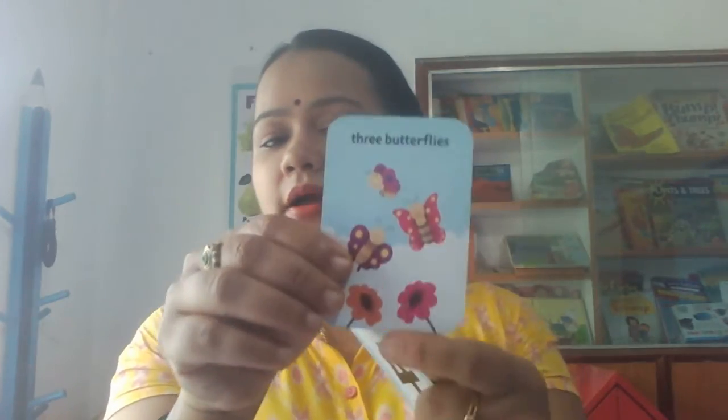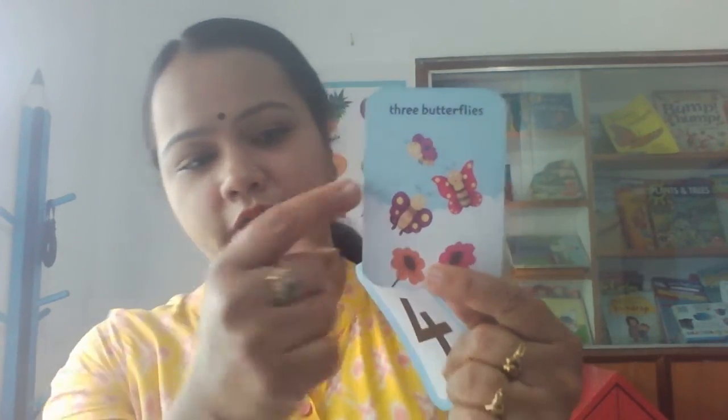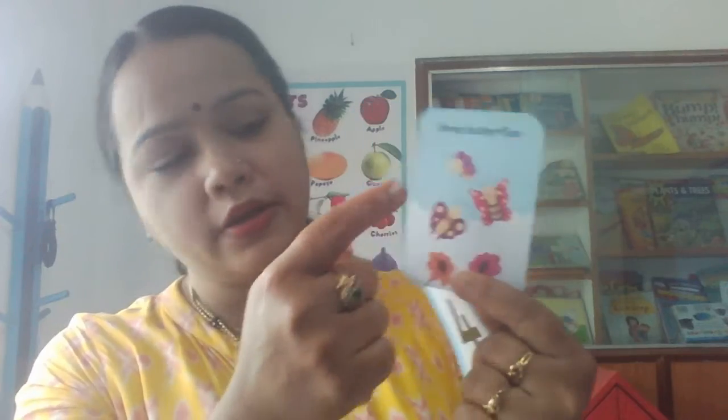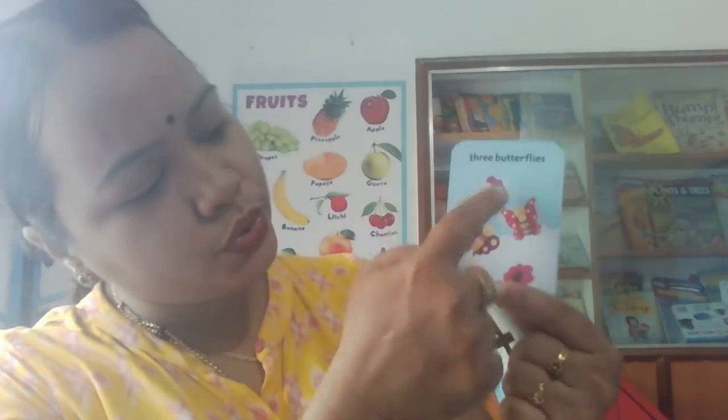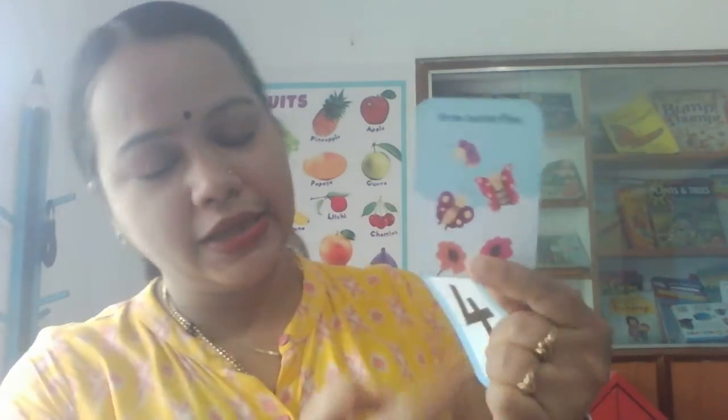Number 3. Now we will count the butterflies here. 1, 2, 3. How many butterflies are there? 3 butterflies are there.